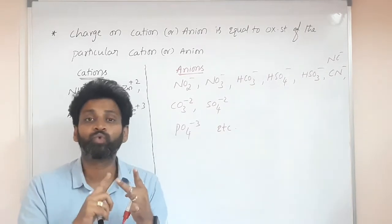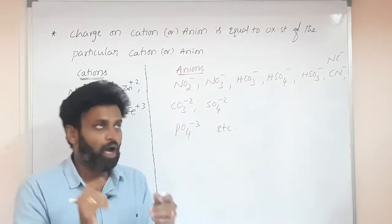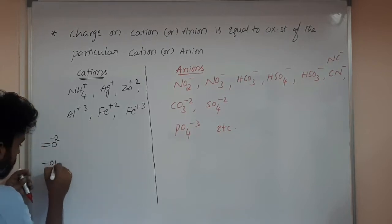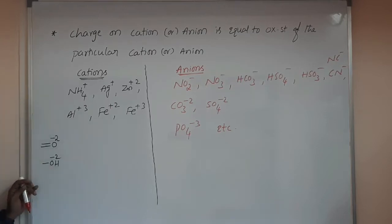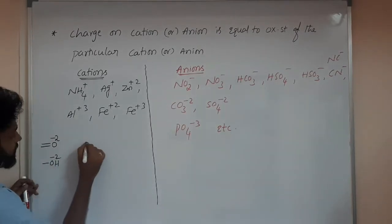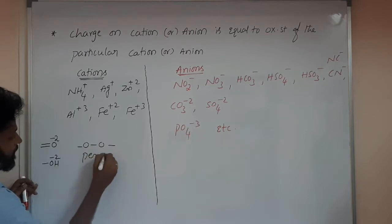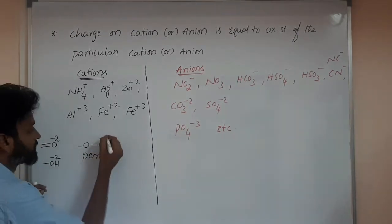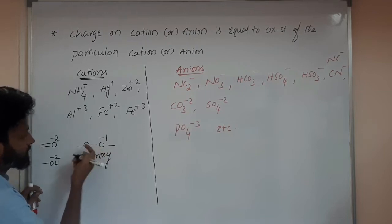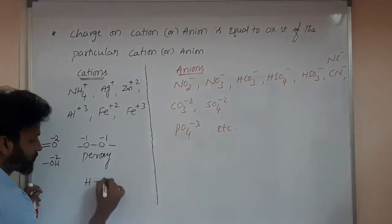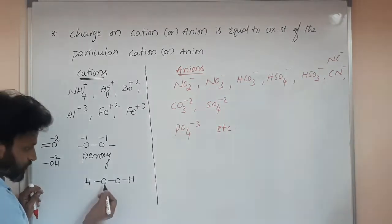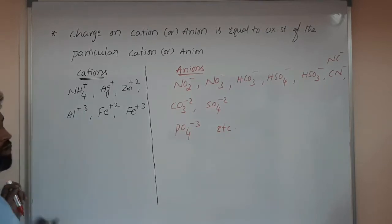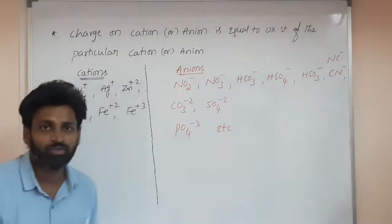In oxide form, oxygen's oxidation state is minus two. When oxygen is in the form of OH, it is also minus two. When two oxygens are single-bonded to each other (O–O), that is called a peroxy bond — for example, hydrogen peroxide H₂O₂. That is called peroxide. In superoxide, the oxidation state of oxygen is minus one-half. That is what we discussed previously.